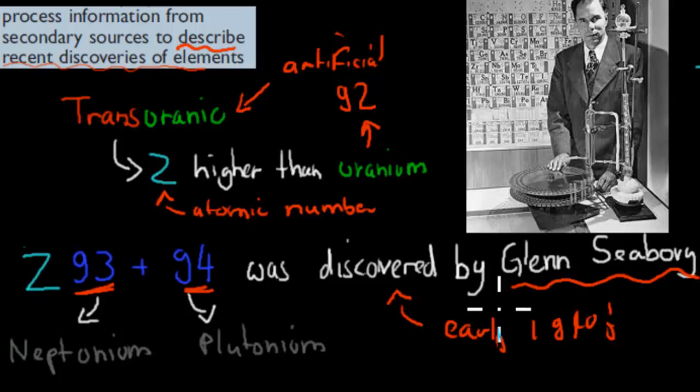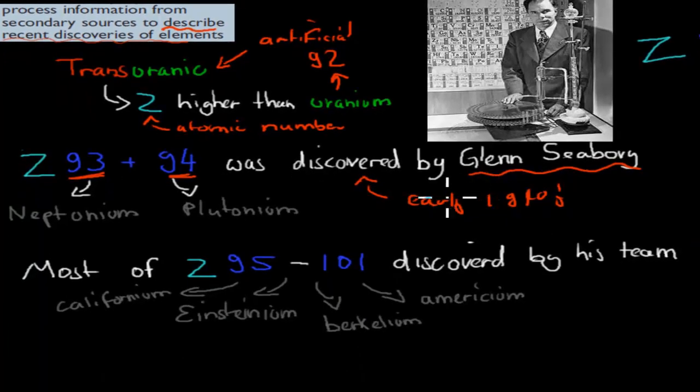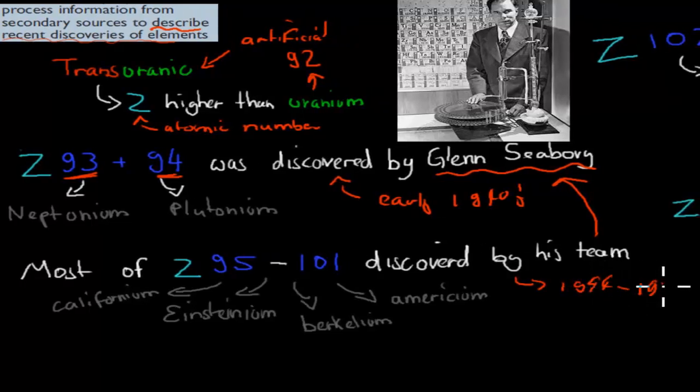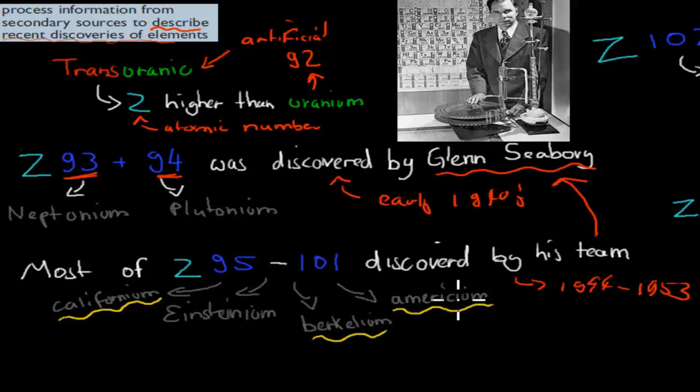And then he and his team went on a discovery rampage. They basically discovered lots of different elements. So most of the atomic number of 95 to 101 were discovered by his team. So the team of Glenn Seaborg. And this would have been from about 1944 to 1953. So between these years, Glenn Seaborg discovered most of the elements from 95 to 101. And they gave names which kind of you can tell where they come from. So you've got californium, berkelium, and americium as examples.